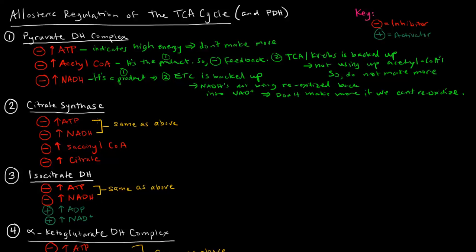Now, what about citrate synthase? The first two allosteric inhibitors are high ATP and high NADH. They are inhibitors for essentially the same reason as for the pyruvate dehydrogenase complex. One thing to note is that citrate synthase is the first committed step of the pathway, so we want to make sure it only occurs when we really need it — when we want to commit to this pathway.